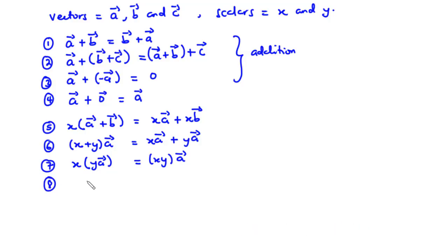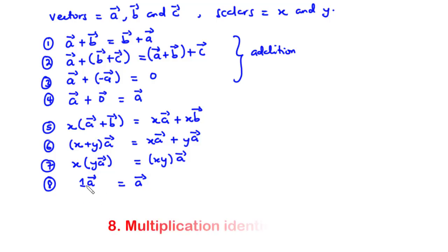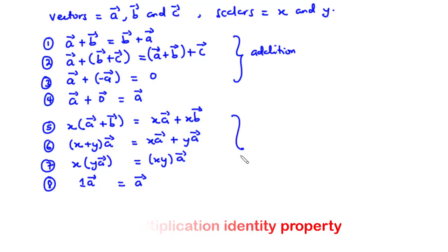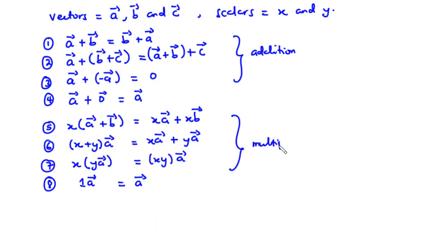Property 8: one times vector A equals vector A itself. If you have a vector multiplied by one, it equals the same vector. These are the multiplication properties of vectors.